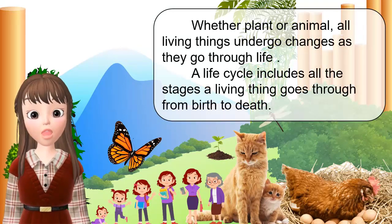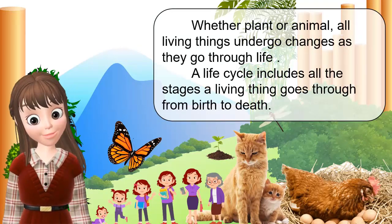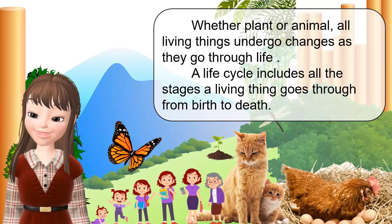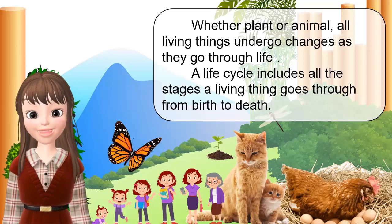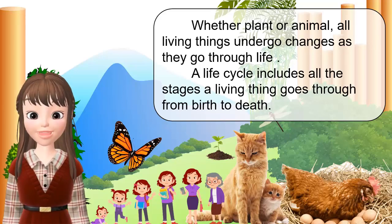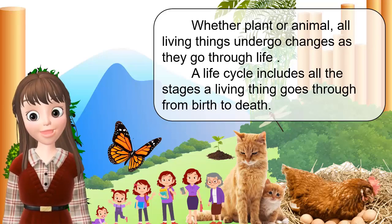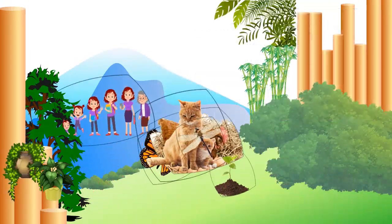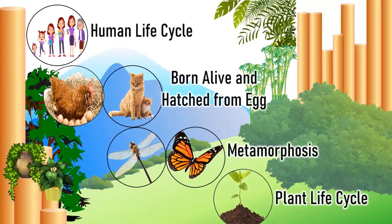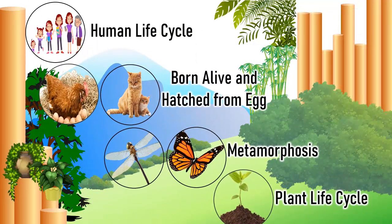Whether plant or animal, all living things undergo changes as they go through life. A life cycle includes all the stages a living thing goes through from birth to death. For our discussion today, we will cover the human life cycle, animals that are born alive or hatched from egg, metamorphosis, and plants' life cycle.